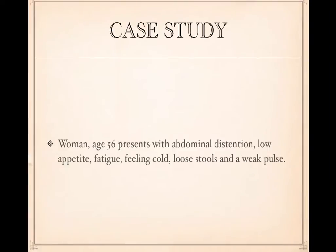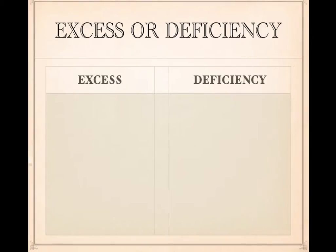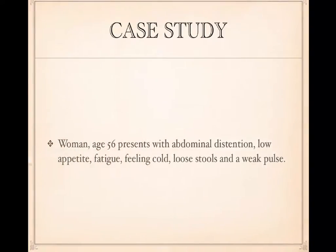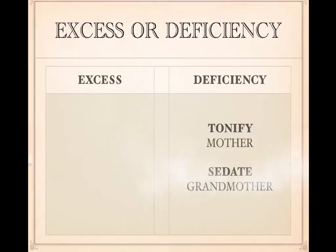So here we have a case study. Woman, age 56, presents with abdominal distension, low appetite, fatigue, feeling cold, loose stools, and a weak pulse. The first thing you want to do is decide which organ or element is affected. The second thing is to decide if it's excess or deficiency. Judging from these signs and symptoms, it's clear that the earth element is affected, and it's definitely a deficiency. So the treatment principle is to tonify the mother and sedate the grandmother.